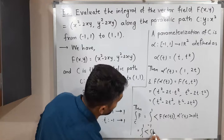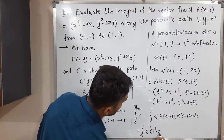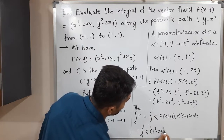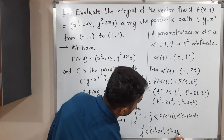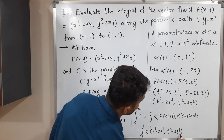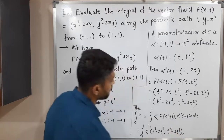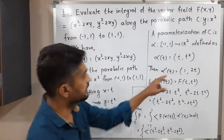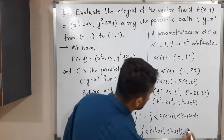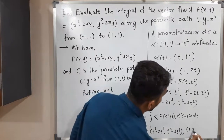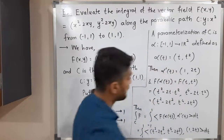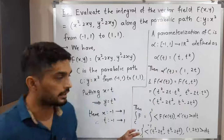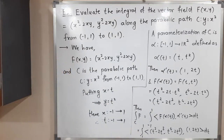The integral of f over C equals the integral from -1 to 1 of the inner product of f(α(t)) and α'(t) dt. The curve C has parametrization α defined on [-1, 1], so the limits are -1 to 1. Putting in values: the inner product of (t² - 2t³, t⁴ - 2t³) and (1, 2t) dt. Make a screenshot and we will go further.